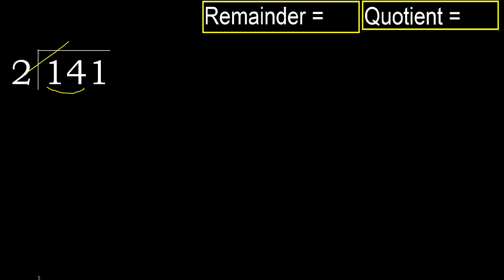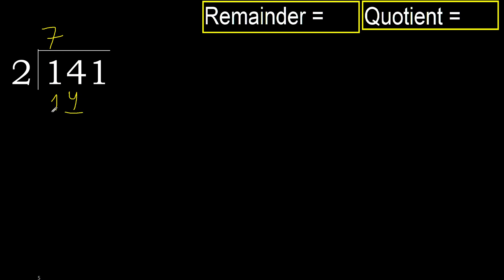But not greater. 2 multiply by 8 is 16 — 16 is greater. Multiply by 7: 14 is not greater. So 14 minus 14 equals 0.